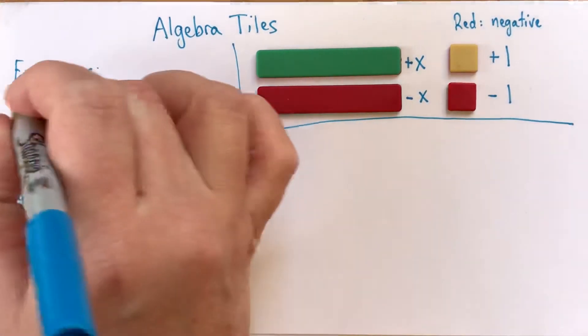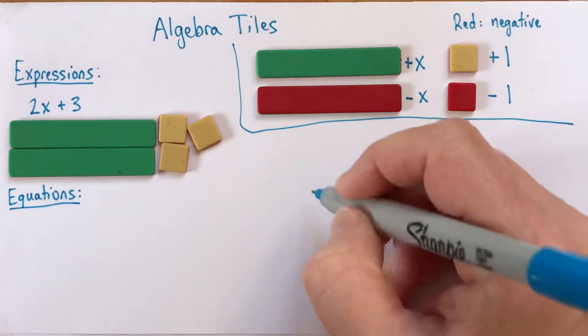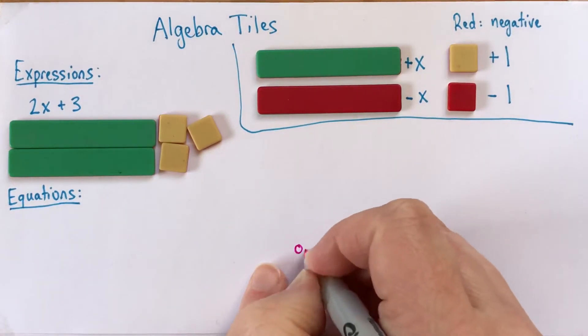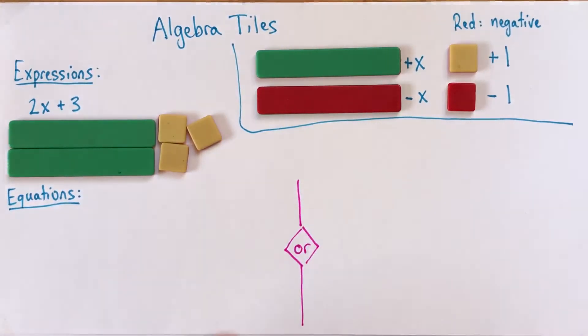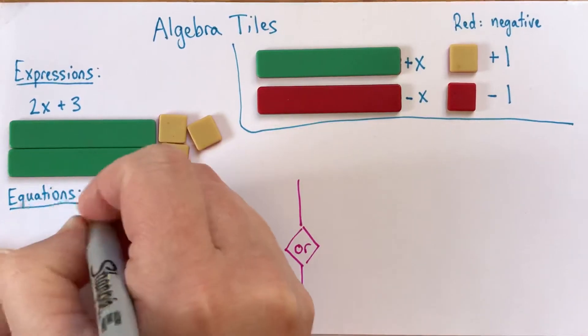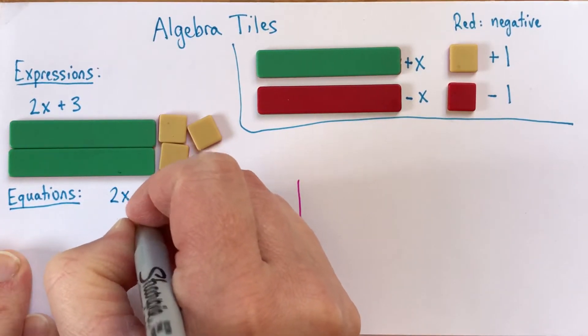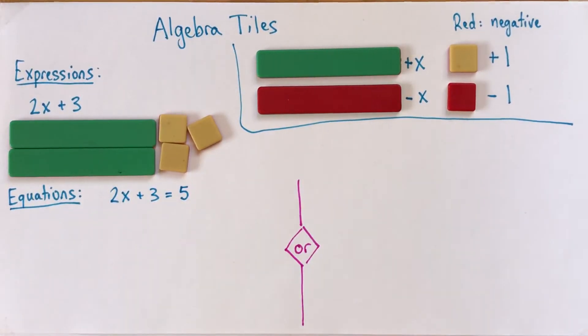Now, with equations, I'm going to show you two options. Separate right down the middle here. And let's look at the equation. We'll say 2X plus 3 equals 5. So an equation, I remind you, is two expressions that are set equal to each other. That means that they're the same. They have the same value.